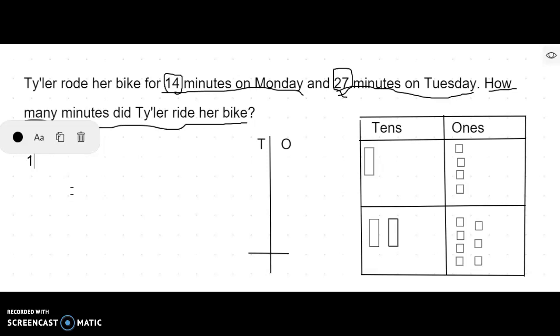Let me go back. 14 plus 27 equals, hmm. And remember when we're doing a word problem we need to have a written response. So I'm going to say Tyler rode her bike, hmm, minutes.